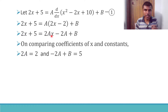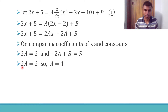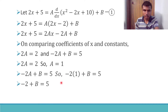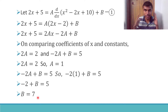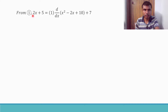Comparing coefficients of x: we have 2 on the left and 2A on the right, so 2A = 2, which gives A = 1. Comparing constants: we have 5 on the left and (-2A + B) on the right. So -2(1) + B = 5, giving -2 + B = 5, and therefore B = 7. So A = 1 and B = 7.